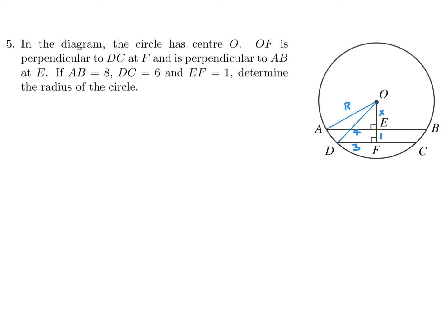So, now let's set this up. So from the triangle AEO, from that guy, we'll get a Pythagorean relationship of 4 squared plus X squared is R squared, right? And then from the triangle DFO, that guy, we get 3 squared plus 1 plus X squared is R squared. I believe that's correct. So now let's solve this, I guess.